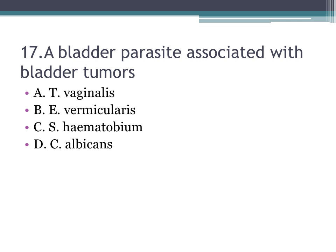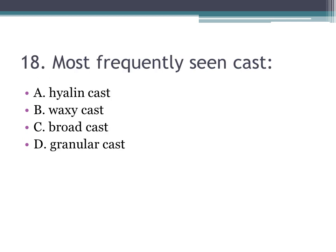Number seventeen: a bladder parasite associated with bladder tumors — A. Trichomonas vaginalis, B. Enterobius vermicularis, C. Schistosoma haematobium, D. Candida albicans. The correct answer is C, Schistosoma haematobium.